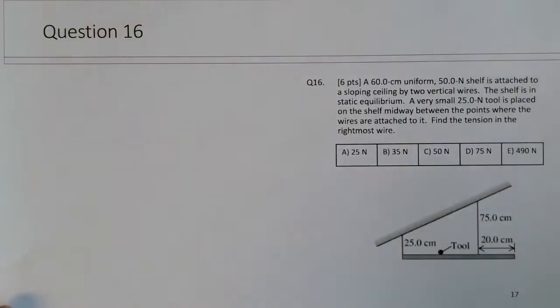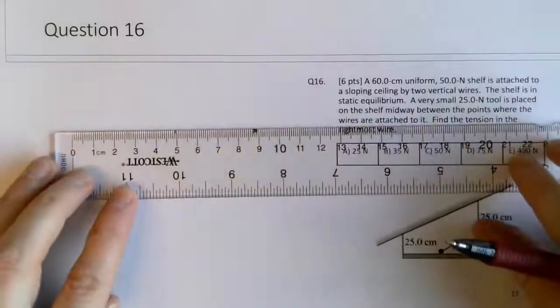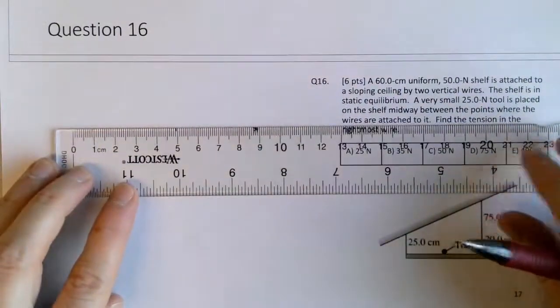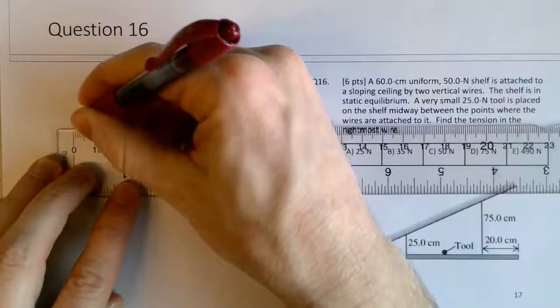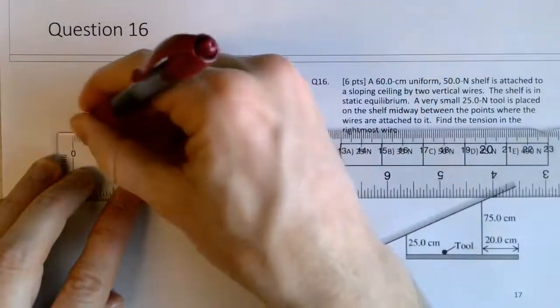So I'll go ahead and draw a simplified diagram for the shelf. Maybe I'll just make it here 6 centimeters on my ruler so we can make a scaled version of the diagram.